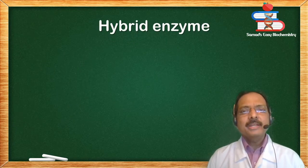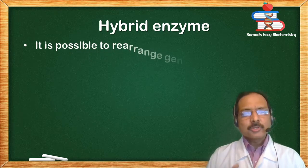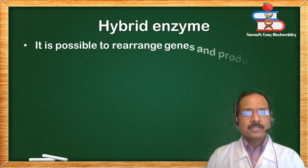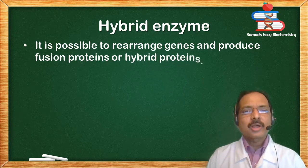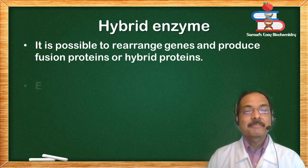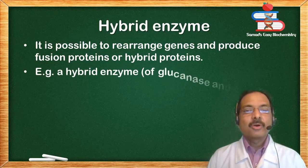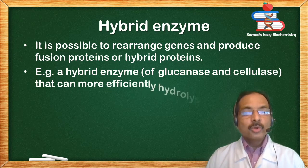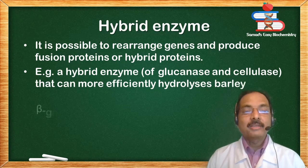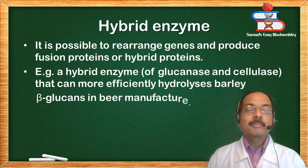Hybrid enzymes: it is possible to rearrange genes and produce fusion proteins or hybrid proteins or hybrid enzymes. Example: a hybrid enzyme of glucanase and cellulase that can more efficiently hydrolyze barley beta-glucans in beer manufacture.